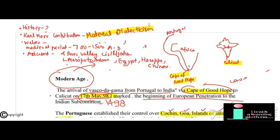In ancient times there were four main civilizations: Mesopotamian, Egyptian, Harappan, and Chinese. Mesopotamian civilization was along the Tigris and Euphrates River Valley, Egyptian civilization along the Nile, Harappan civilization along the Saraswati River, and Chinese civilization along the Huanghe River in southern China. Ancient civilizations mainly developed in Asia or nearby Asia and Eastern Africa.